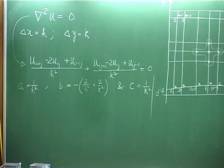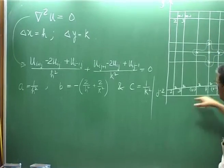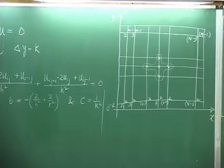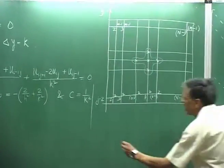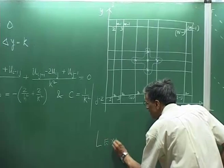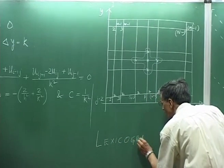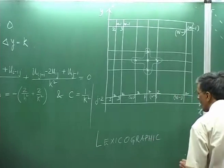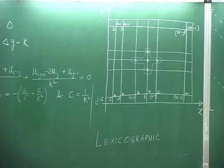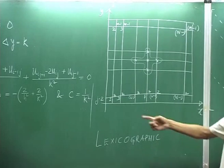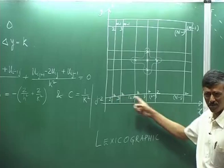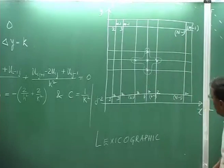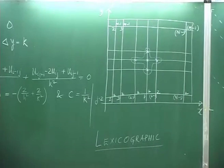Now, for simplification, let us define 1/h² as a, b as −(2/h² + 2/k²), and c as 1/k². Then let us try to see how we stack the unknowns. It is a boundary value problem, so we prescribe boundary conditions on all four segments of the boundary. Suppose we stack the points in what is called a lexicographic fashion — what it means is that you follow a structure in the way you define the points. For example, you stack the unknowns going from left to right, then bottom to top. That is the sequence we are calling the lexicographic sequence of stacking the points.